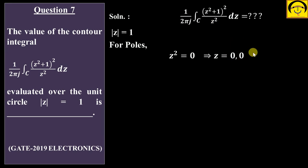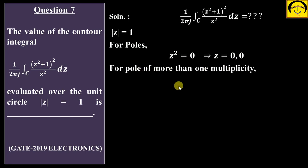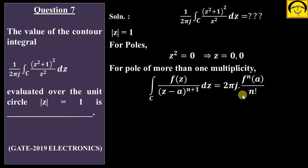So z = 0 is a singularity — a pole — with multiplicity 2. This complete f(z) is analytic everywhere except at z = 0 with multiplicity 2. For a pole with multiplicity more than one, the formula is: integral of f(z) / (z − a)^(n+1) dz = 2πi times the nth derivative of f with respect to z at z = a, divided by n factorial. Here j is used instead of i, so 2πj is written.